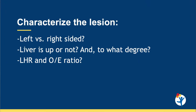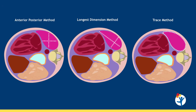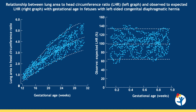To characterize the lesion further, we want to know whether it is left or right-sided, whether the liver is up or not and to what degree. We then obtain measurements of the lung to head ratio, which gives us the observed to expected lung head ratio. As you can see in this graphic, there are multiple ways to measure the lung to head ratio: the anterior-posterior method, the longest dimension method, and the trace method. The LHR increases with gestational age, whereas the O to E LHR remains more constant throughout gestation.